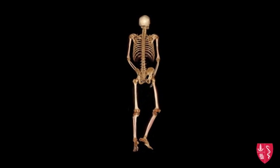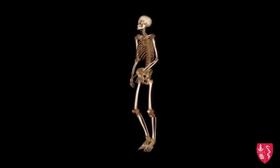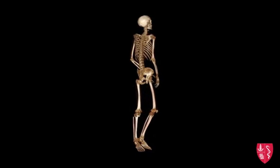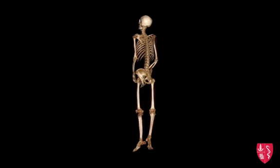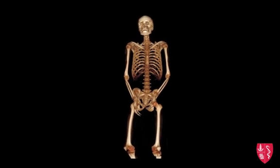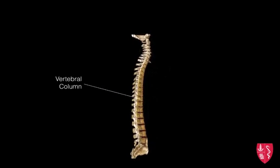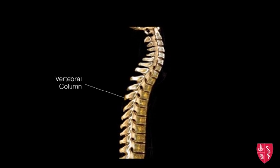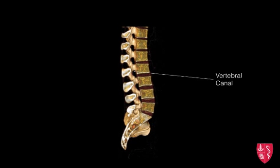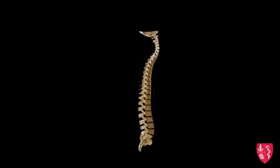Osteoarthritis typically affects individuals over the age of 45, and commonly occurs in highly mobile joints such as the fingers, thumb, and wrist, or large weight-bearing bones within the body such as the knees, hips, and spine. The spine, or the vertebral column, is responsible for protection of the spinal cord coursing through the vertebral canal. Osteoarthritis affecting this area may cause damage to either the spinal cord or the nerves in this region.